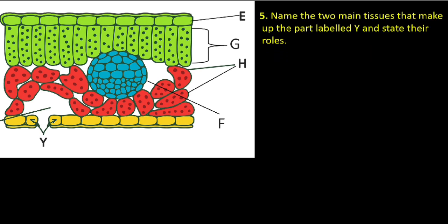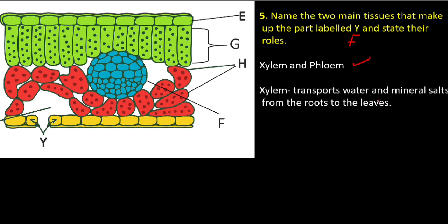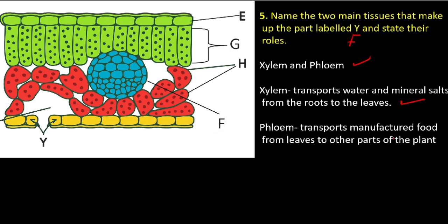Name two main tissues that make up the part labeled F — note it is F, not Y — and state their functions. In F we have the vascular bundles: the xylem and the phloem. The function of xylem is to transport water and mineral salts from the roots to the leaves. The phloem transports manufactured food from the leaves to other parts of the plant.